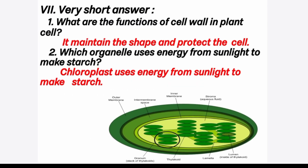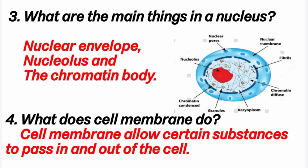Seventh section: very short answer. First question: what are the functions of the cell wall in a plant cell? Answer: it maintains the shape and protects the cell. Second question: which organelle uses energy from sunlight to make starch? Answer: chloroplast uses energy from sunlight to make starch. Third question: what are the main things in a nucleus? Answer: nuclear envelope, nucleolus, and chromatin body. The nucleus is the brain of the cell because it controls all the activities of the cell.